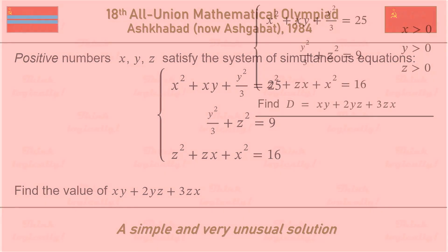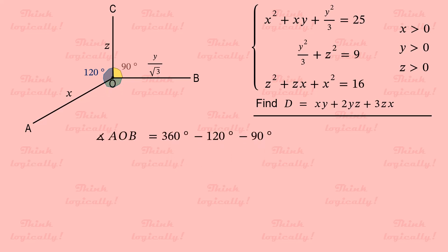And here is the solution. For brevity, let d be the value we are after. Take point O somewhere on the plane. And construct segment OB with the length of y over square root of 3. Followed by segment OC perpendicular to segment OB with length Z. Next we draw segment OA with length X forming 120 degrees angle with segment OC. The remaining angle, angle AOB equals 360 degrees minus 120 degrees minus 90 degrees which gives 150 degrees.